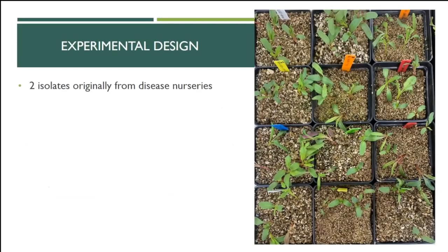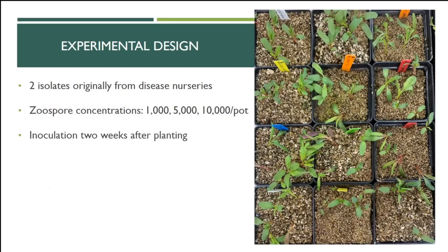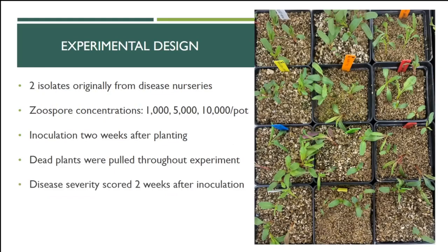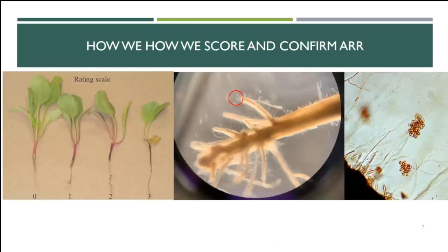For experimental design, I was using two different isolates from different disease nurseries. We tried a bunch of different zoospore concentrations, all applied to individual pots. We inoculate two weeks after planting because our zoospores need a plant to swim towards. We pull dead plants throughout the experiment, and then we score them two weeks after inoculation. By that two-week point, not a lot is left to score, so it's usually very fast. We use a zero to three scale, with zero being perfect and three being dead or dying. We also confirm that we actually have Aphanomyces by looking for characteristic zoospore clusters.